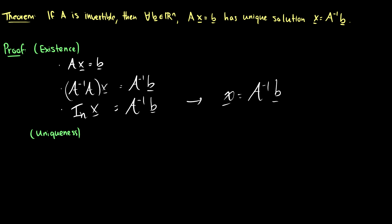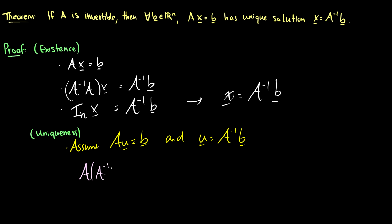We know the solution exists, but is it unique? We assume Au equals b and u equals A inverse b. Substituting A inverse b into u, we get A times A inverse b, which by the associative property equals the identity matrix times b, which is just b. Therefore the solution is unique. So if Ax equals b, we can solve for x by computing A inverse b.